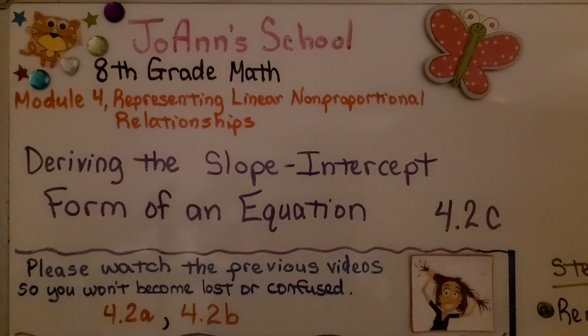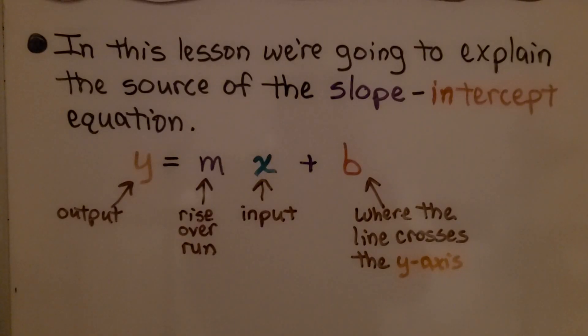Deriving the slope-intercept form of an equation, Lesson 4.2c. In this lesson, we're going to explain the source, the origin, of the slope-intercept equation. We've got y as our output, m as our rise over run, our slope, x as the input, and b is where the line crosses the y-axis, it's the y-intercept.